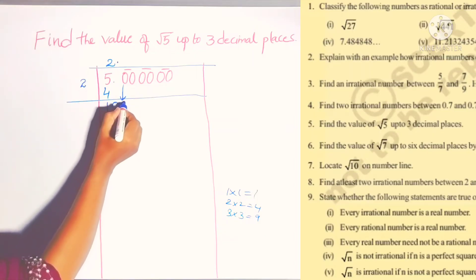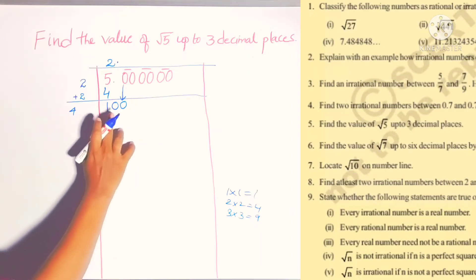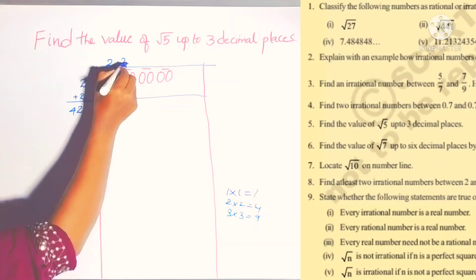Here the decimal point is there, so put decimal point here. Now we can bring these zeros down, so it is now 100. In the second step, we wrote 2 here in the divisor, so just add that 2, then it will become 4. Now here 3 digits are there, take past 2 digits. 4 twos are 8, 4 threes are 12, it is more than 10, so write 2 here.